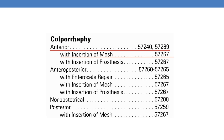In the CPT index, if you look up colporrhaphy — in our question it is an anterior colporrhaphy — the anterior colporrhaphy CPTs are 57240 and 57289. You need to refer to 57240. In addition to that, insertion of mesh is done, and for the insertion of mesh the CPT is 57267.